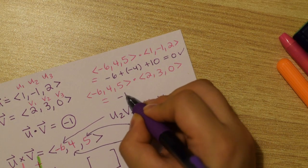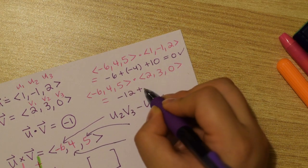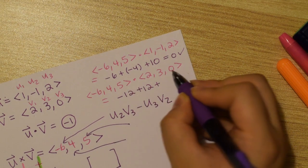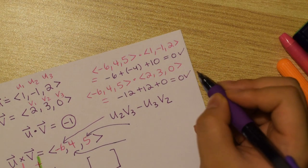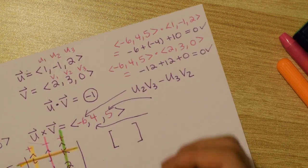Negative 6 times 2 is negative 12, plus 4 times 3 is 12, plus 5 times 0 is zero. Negative 12 plus 12 is zero, plus zero is zero. Indeed. That is so satisfying.